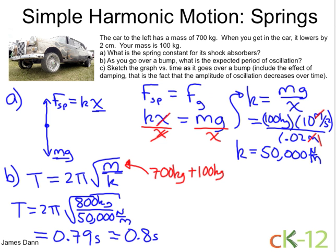And now all that's left to do is to sketch the graph, and we want to include the effects of damping. What that's going to do is lower the amplitude over time. So here's our time, and this is some distance axis, I'll just label it x.